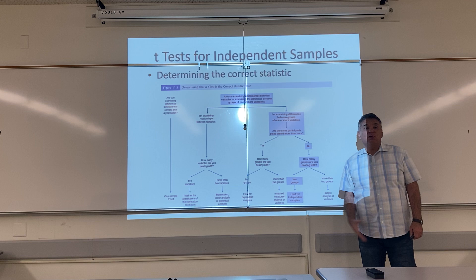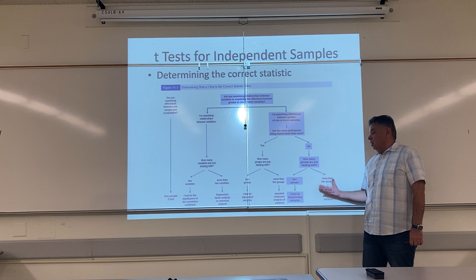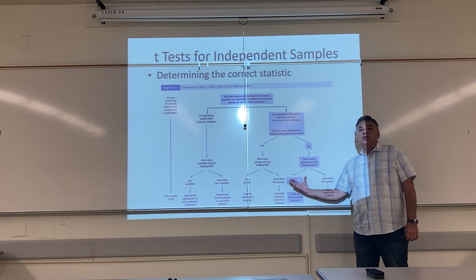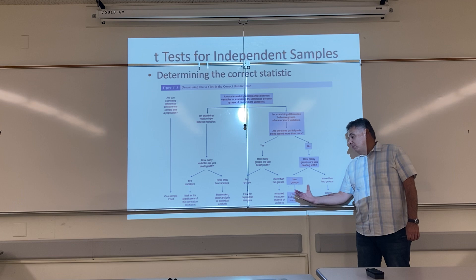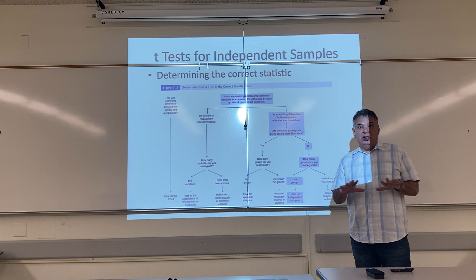And then the next question is: how many groups are you studying? Do you have two groups, or do you have more than two groups? We have two groups — men versus women, boys versus girls, independents versus Republicans. We have two separate, mutually exclusive groups. You're in one group or the other, but you can't be in both. So the right test to do is a t-test for independent samples. Independent means the two groups are not related — they're separate.